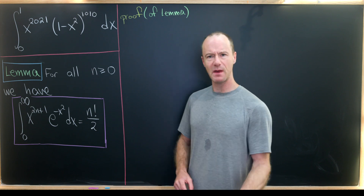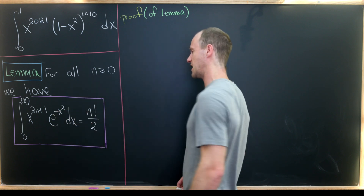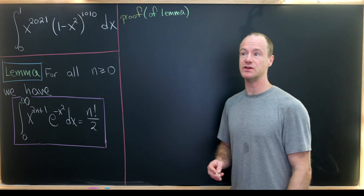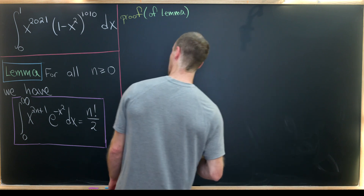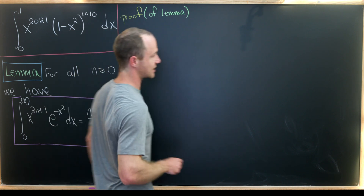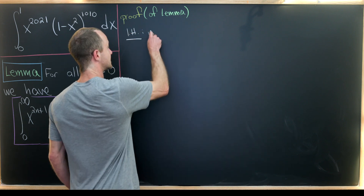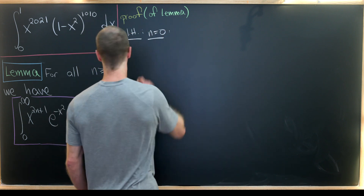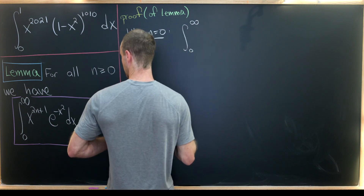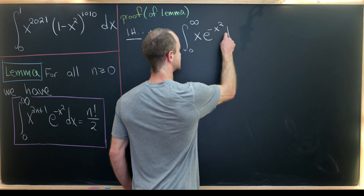So let's get to it. We're going to start with the proof of this lemma. And since this depends on a discrete variable n, we probably want to use induction. Our induction base case will be the n equals zero case, where our integral collapses to the integral from zero to infinity of x times e to the minus x squared dx.